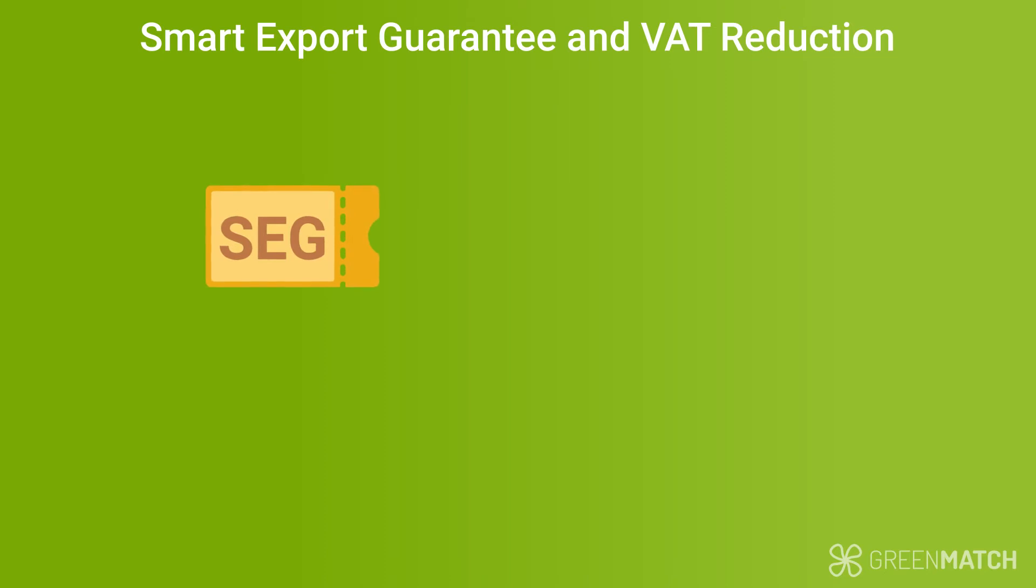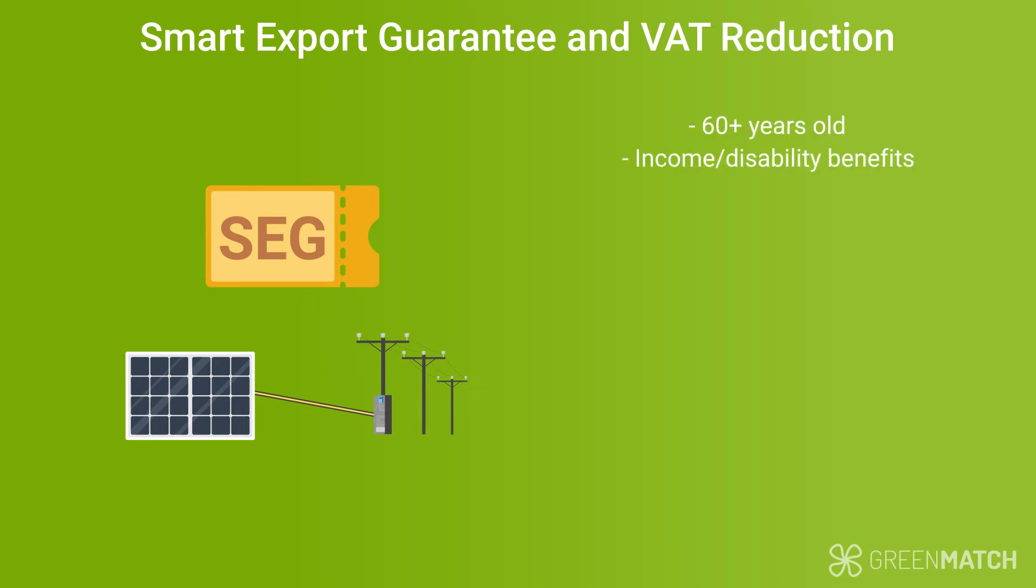Besides that, there are UK-wide opportunities like the Smart Export Guarantee or the VAT reduction. The Smart Export Guarantee or SEG allows you to sell surplus energy back to the grid at a small price. If you're over 60 years old or if you're on income or disability benefits, you are eligible for the VAT reduction on your installation. Usually VAT is 20%, but for those eligible, you only need to pay 5% in VAT.